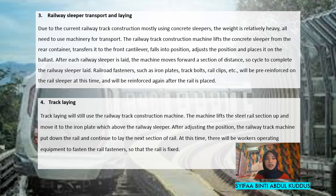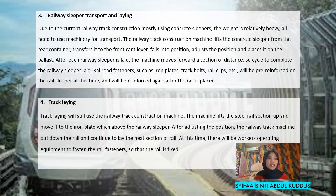The fourth step is track laying, which again uses the railway track construction machine. The machine lifts the steel rail section up and moves it to the iron plate above the railway sleeper. After adjusting the position, the machine puts down the rail and continues to lay the next section. At this time, workers operate equipment to fasten the rail fasteners so that the rail is fixed.